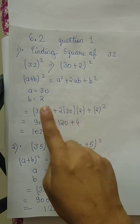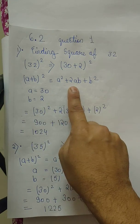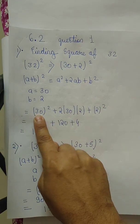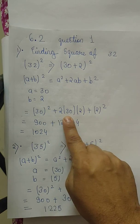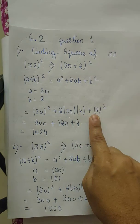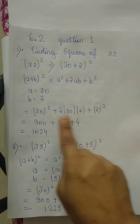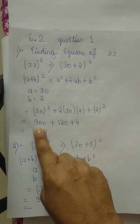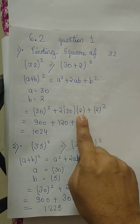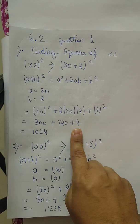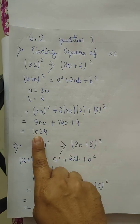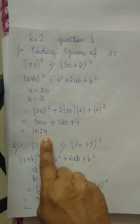a² + 2ab + b², that is 30² + 2(30)(2) + 2². 30 square is 900, 2 into 30 into 2 gives 120, plus 4. We will add these three and we get 1024, which is the square of 32.